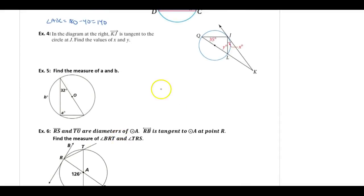Example 4: In the diagram at the right, KJ is tangent to the circle at J. Find the values of X and Y. Angle X is this inscribed angle and intercepts this arc. I don't know the measure of that arc, but this inscribed angle intercepts that same arc. I'm going to take 35, multiply it by 2 to get 70. X is that inscribed angle, and because the vertex is on the circle, it would be 70 divided by 2, which is 35 degrees.